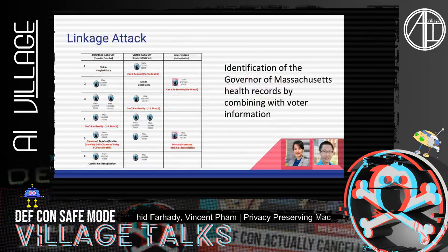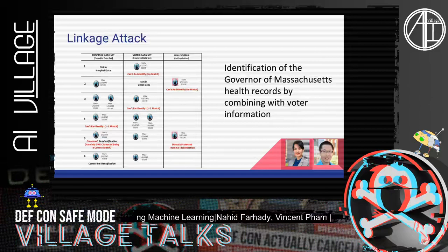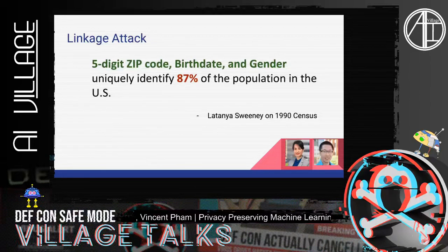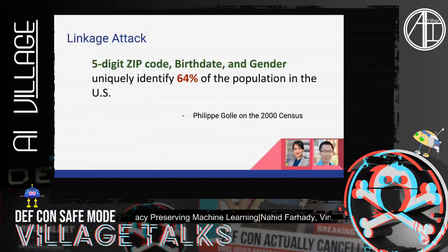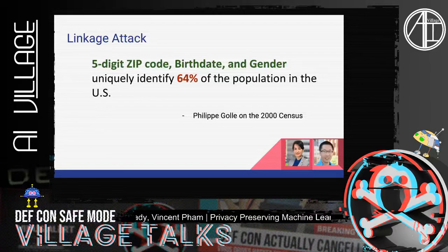Our first type of attack is the linkage attack. In the early 90s, Tina Sweeney found that she was able to identify the governor of Massachusetts by linking his health records to voter information using just three variables: his gender, date of birth, and zip code. She was able to uniquely identify 87% of the U.S. population using the 1990 census. In 2000, Philip Gold identified that using those same three records, he was able to identify only 64% of the population, possibly due to urbanization. But this shows that using very simple features, attackers can identify back to the original source.